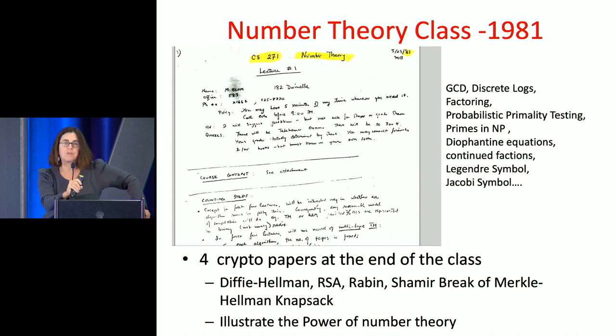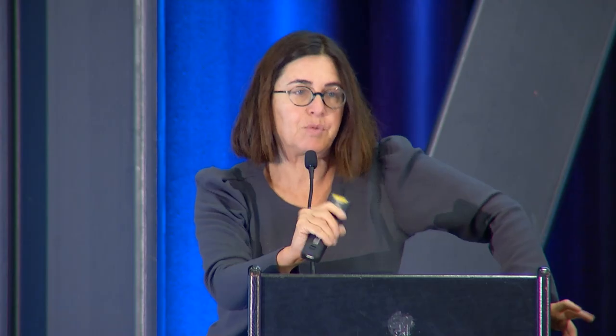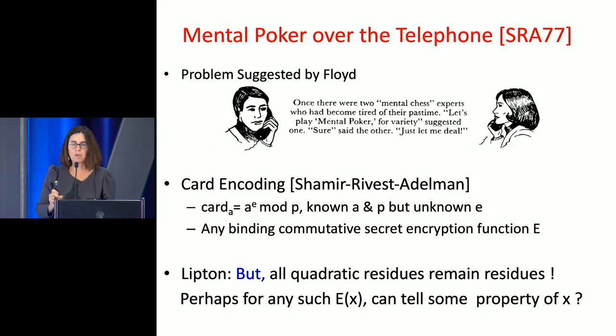At the end of the class, Manuel told us there is this field called modern cryptography, and there were about four or five papers published: a paper by Diffie and Hellman establishing the idea of public key cryptography, then RSA by Rivest, Shamir, and Adleman, a paper by Rabin. It was fascinating that you could use number theory and the idea of efficient — or not efficient — algorithms for certain problems to enable secure communication without meeting ahead of time, digital signatures, and so forth.